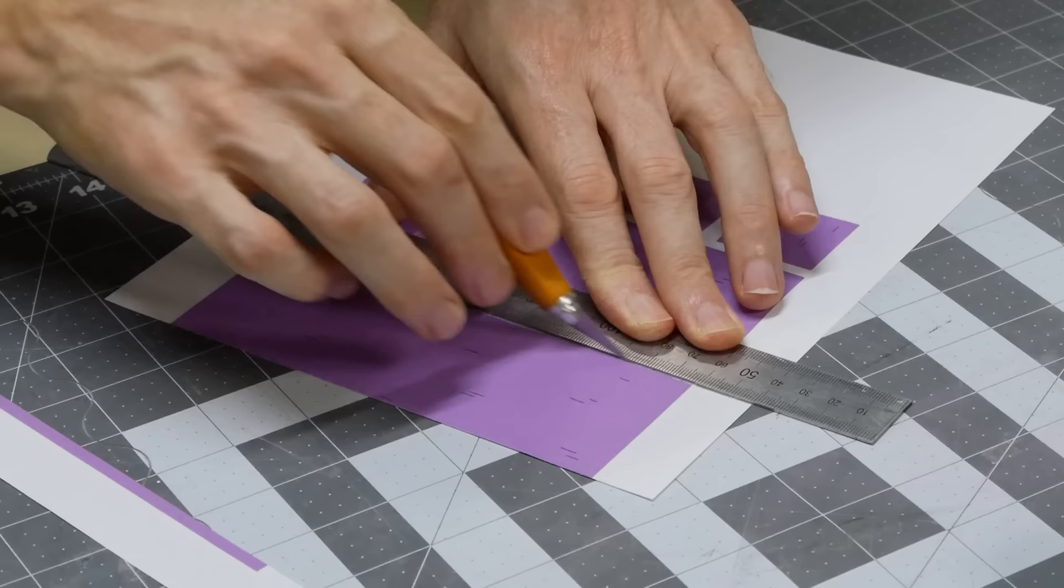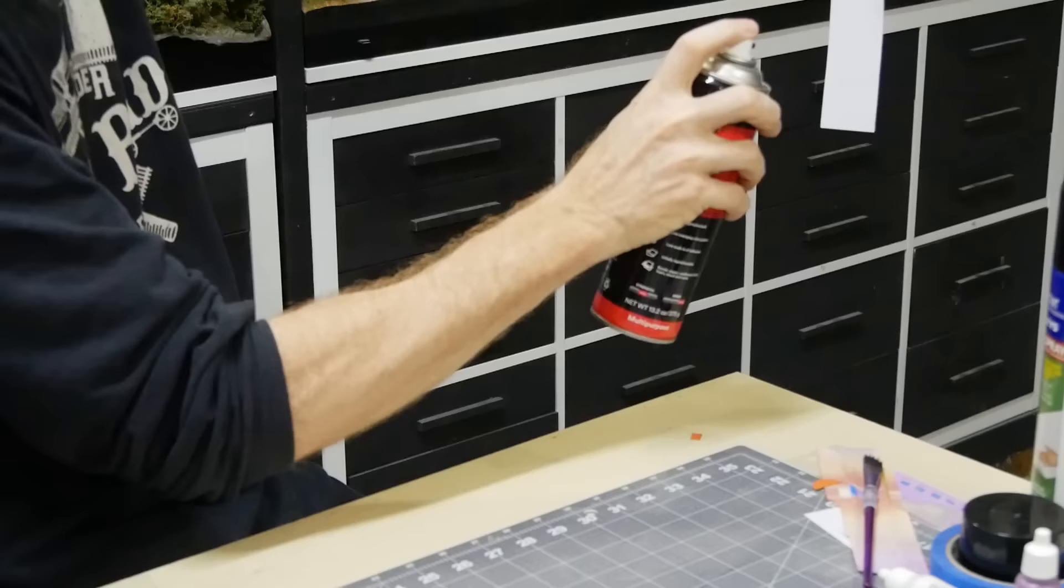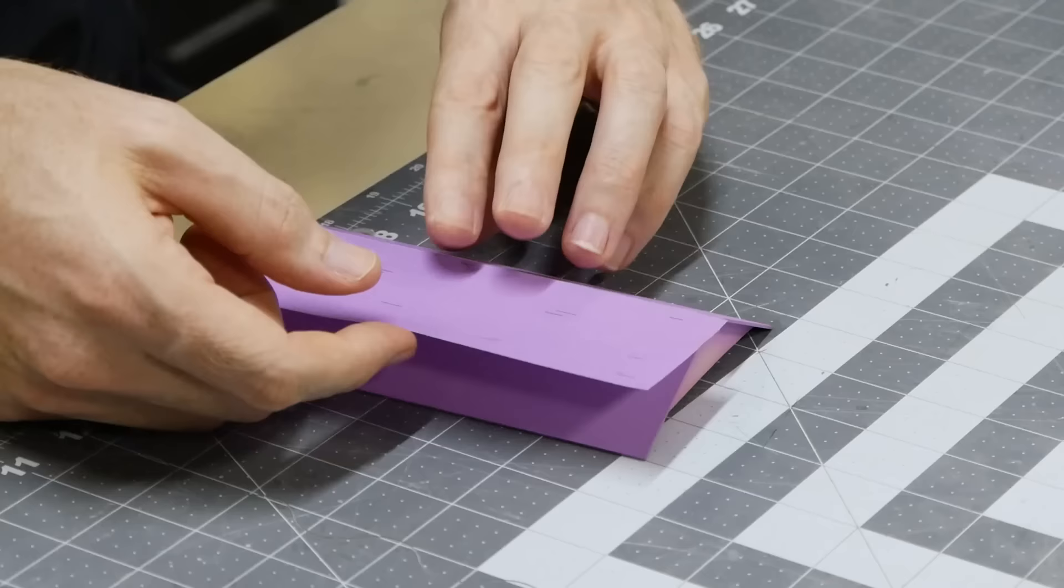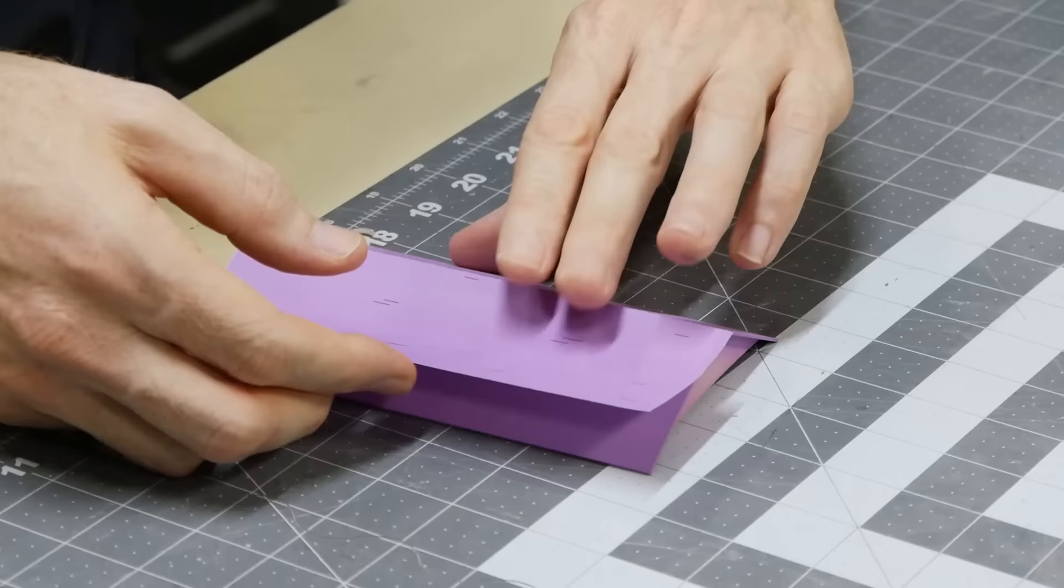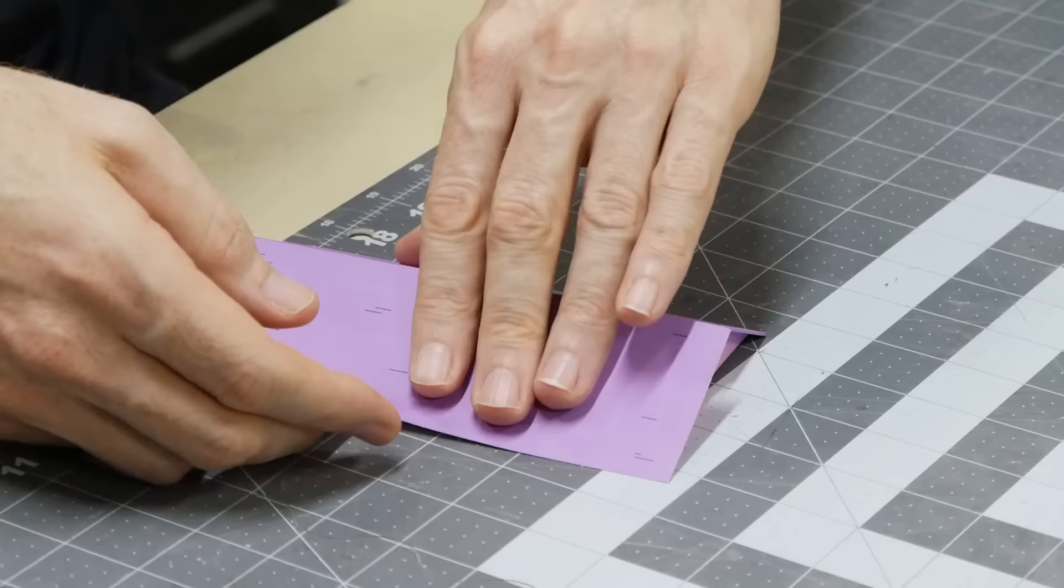Once printed it's cut out. Some Super 77 spray adhesive is used on the back. Then aligning the top edge as best I can I gently press it down, starting from the top and gradually working down to the bottom. This helps prevent bubbles.